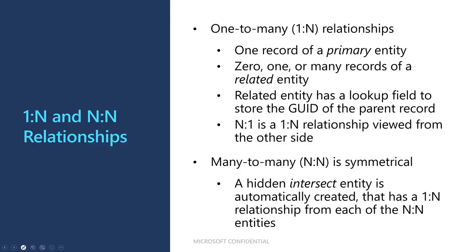Now moving on to relationships — one of the many advantages of deploying your app's data on the Common Data Service versus SharePoint or Excel is the ability to use real data relationships. SharePoint lists are often used related to each other, but the relationship isn't enforced by the data source itself. In the Common Data Service there are two types of relationships: one-to-many (or many-to-one, depending on how it's viewed) and many-to-many.